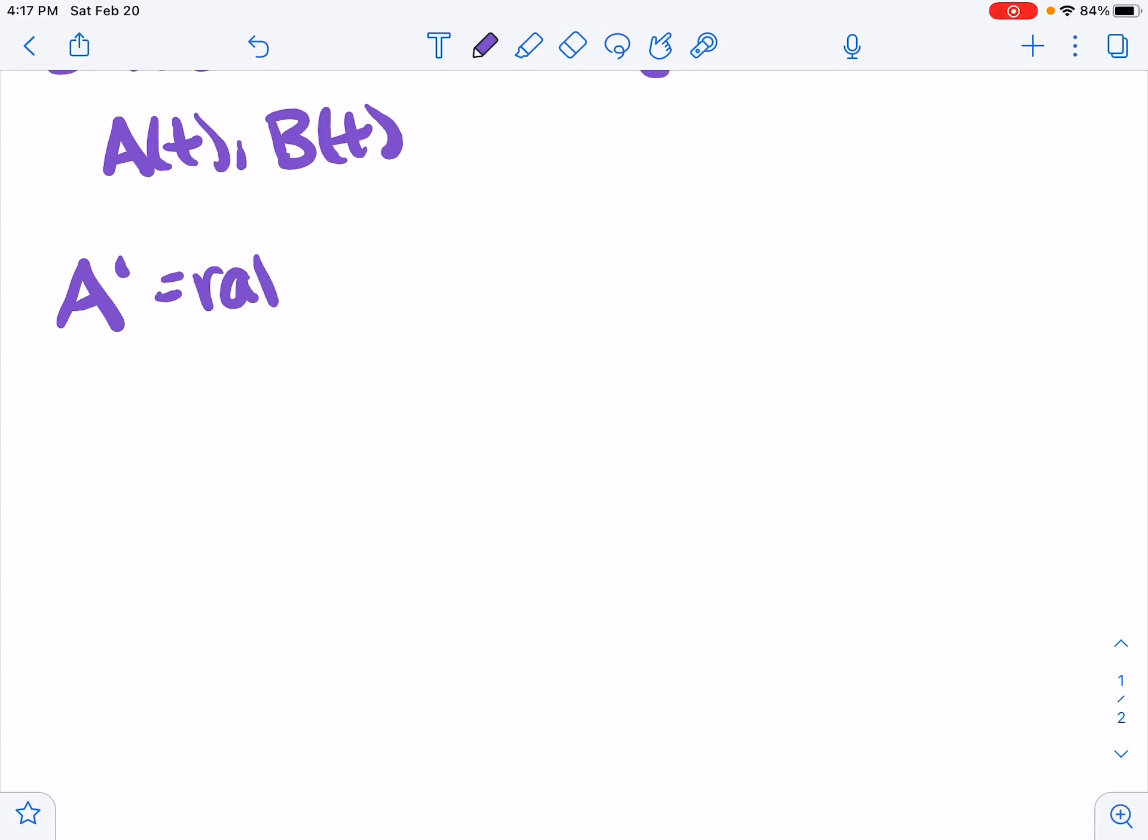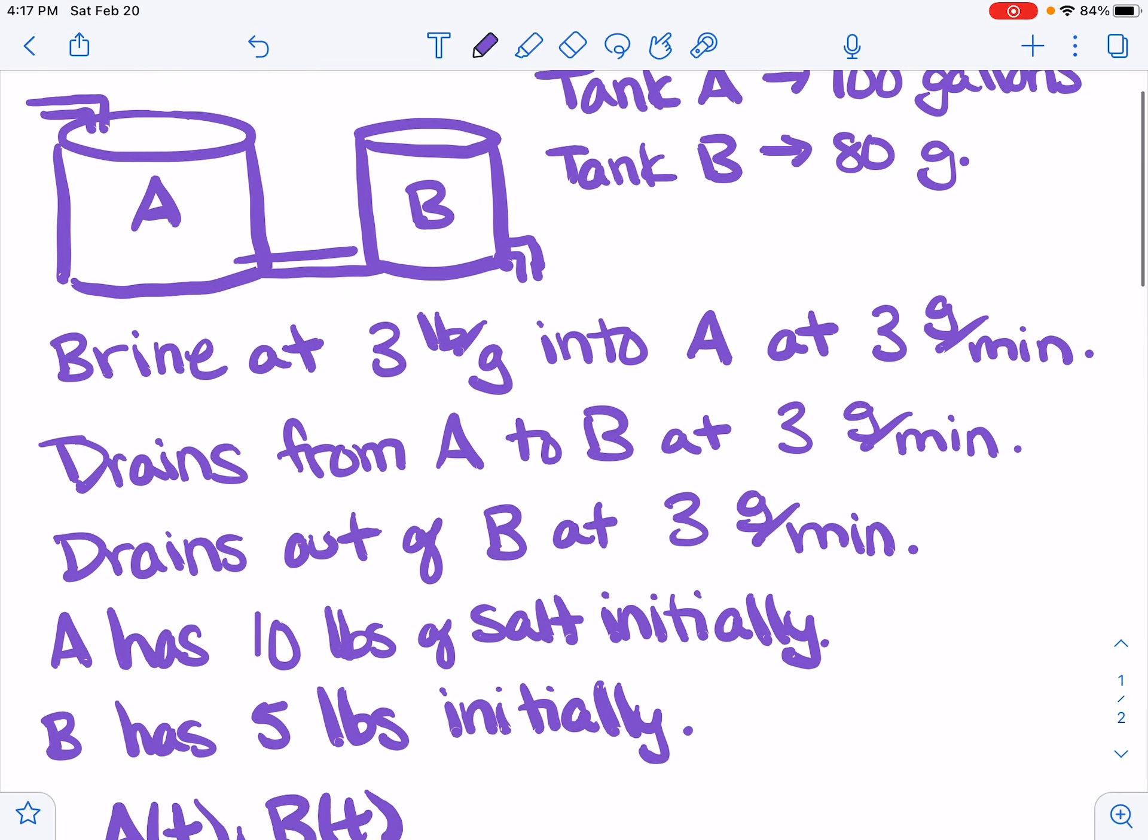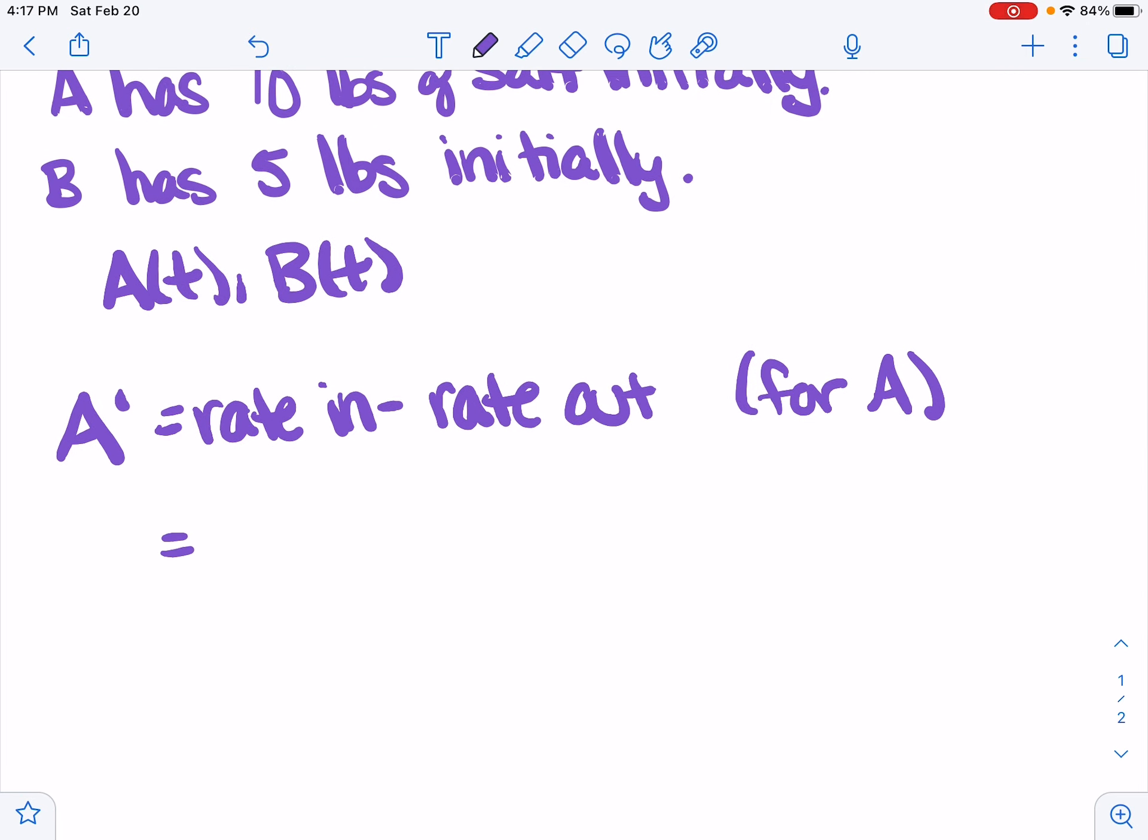A prime is going to be the rate in minus the rate out, and that's in and out of A. So the rate in for A, we have 3 pounds per gallon at 3 gallons per minute. So that's going to be 3 pounds per gallon times 3 gallons per minute.